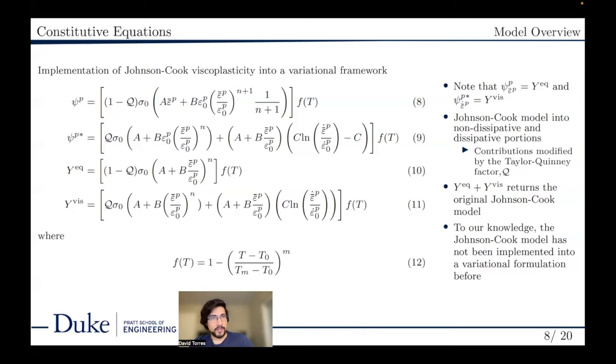Through this, the Johnson-Cook model is split into dissipative and energetic portions, the contributions from which are split by the Taylor Quincy factor Q. Typically, this Q value is around 0.9, meaning that the model is mostly dissipative.